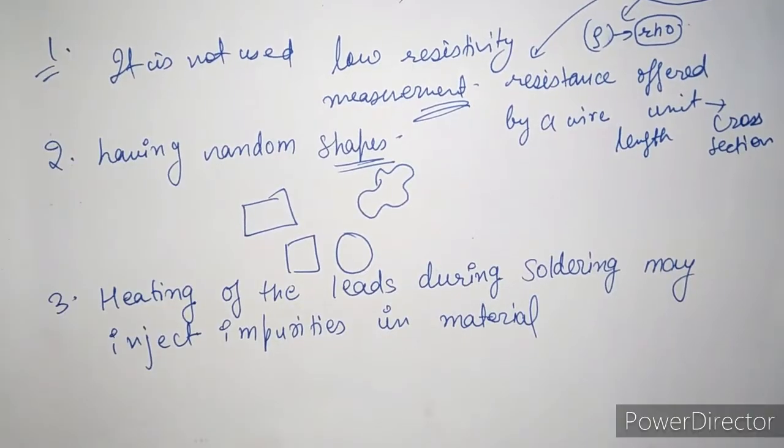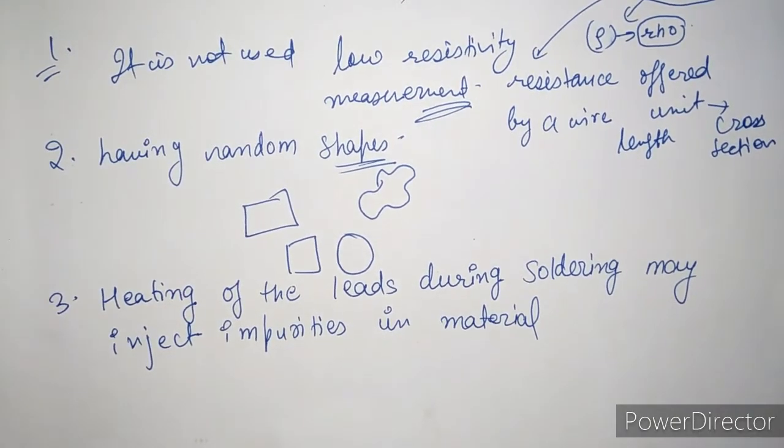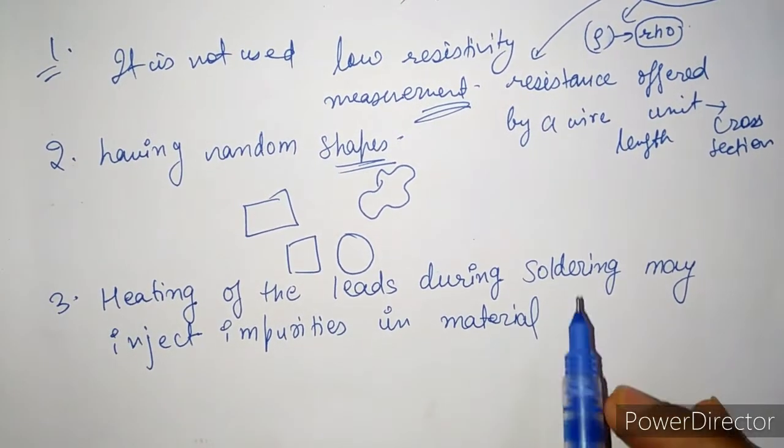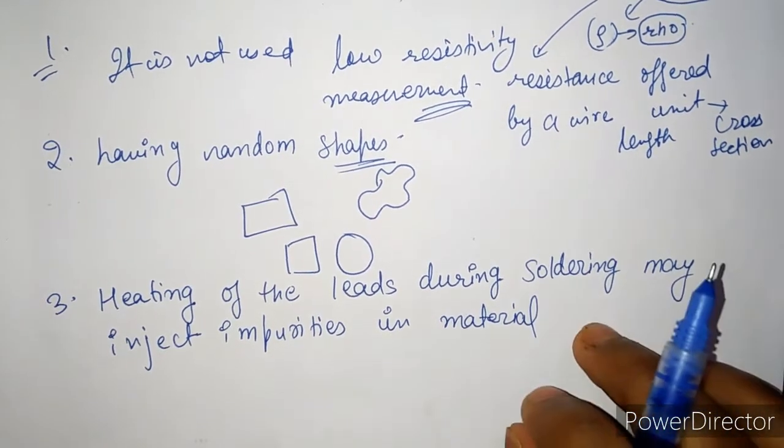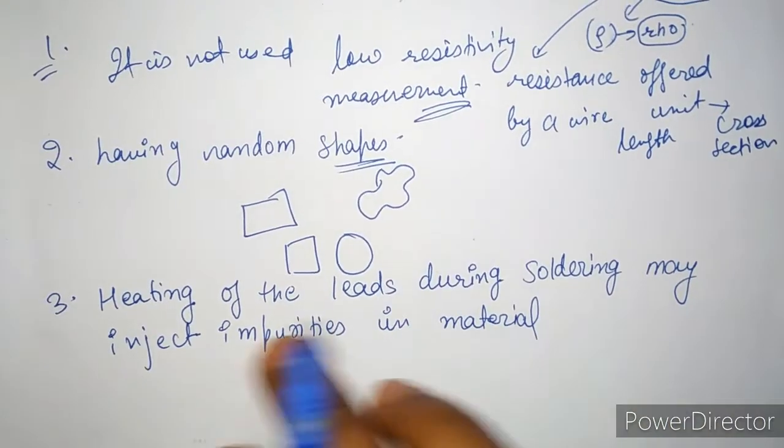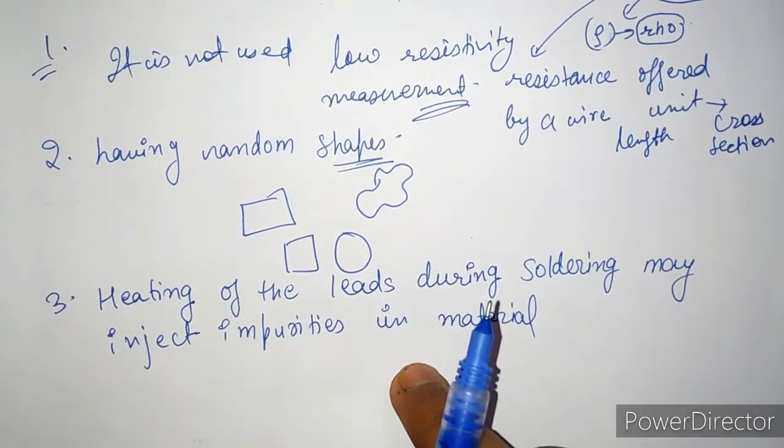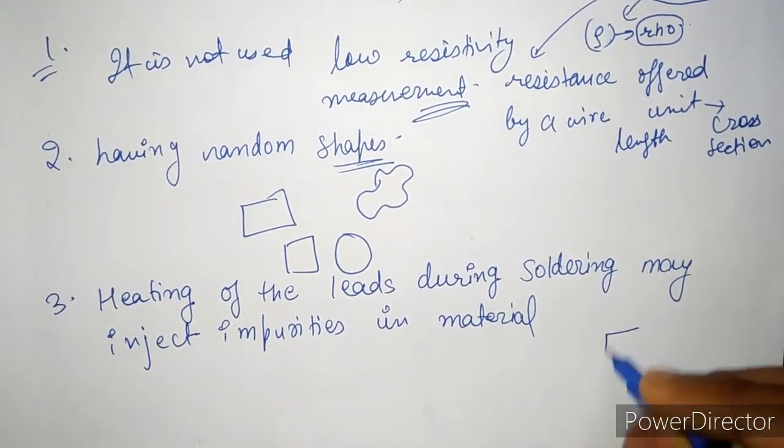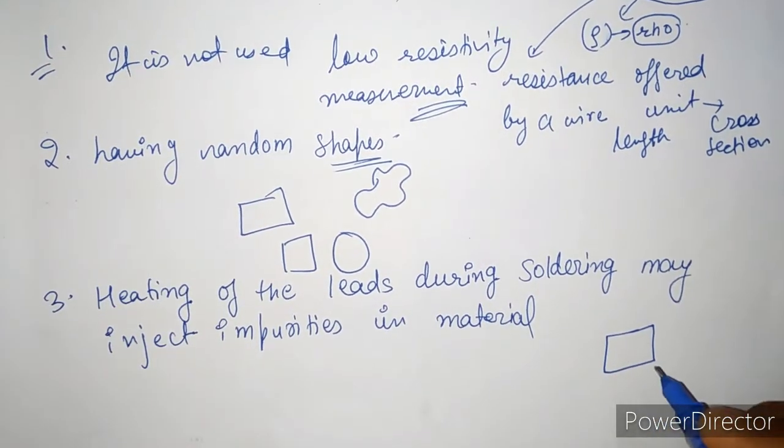And now the third disadvantage is when we heat the leads during soldering, it may inject impurities in the material. Suppose this is a rectangular shape material.